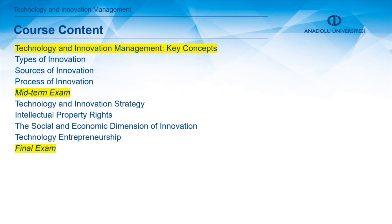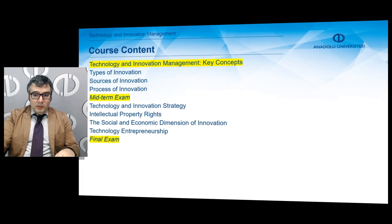Those first four chapters cover technology and innovation management, types of innovation, sources of innovation, and process of innovation. After your midterm, four more chapters will be added: technology and innovation strategy, intellectual property rights, social and economic dimensions of innovation, and technology entrepreneurship — all of which will be your final exam responsibility.